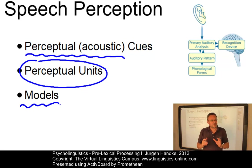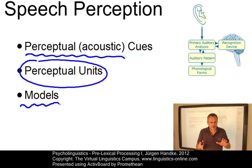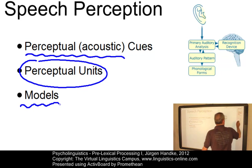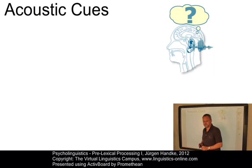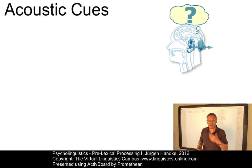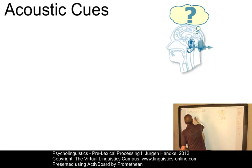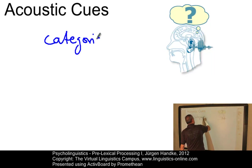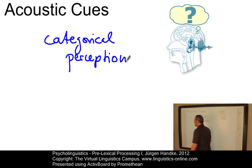The speech signal presents us with far more information than we need in order to recognize what is being said. Still, our auditory system is able to focus our attention on just the relevant auditory features of the speech signal — features that have come to be known as perceptual or acoustic cues. The importance of these small auditory events has led to the assumption that speech perception is by and large not a continuous process, but rather a phenomenon that can be described as discontinuous or categorical — characterized as categorical perception.